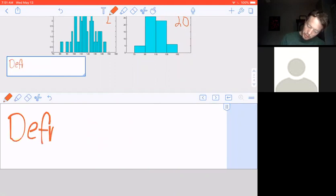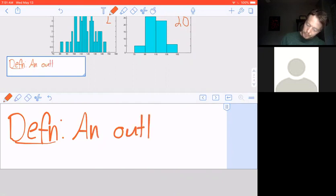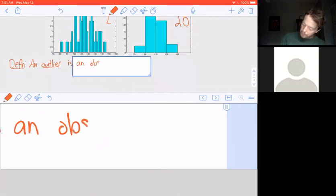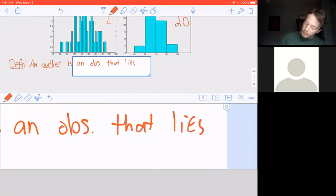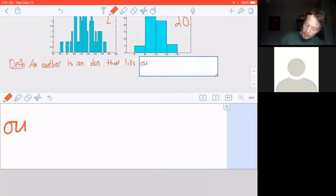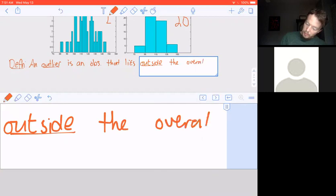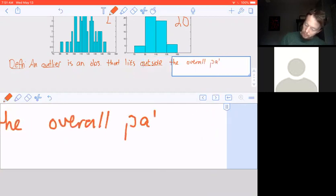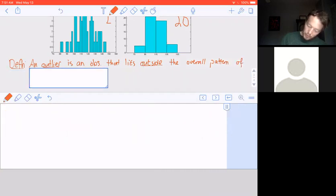So that is histograms. I'm actually, just to wrap up this lecture, I'm going to leave us with a little definition that you're going to need moving forward. An outlier is an observation that lies outside the overall pattern of a distribution.